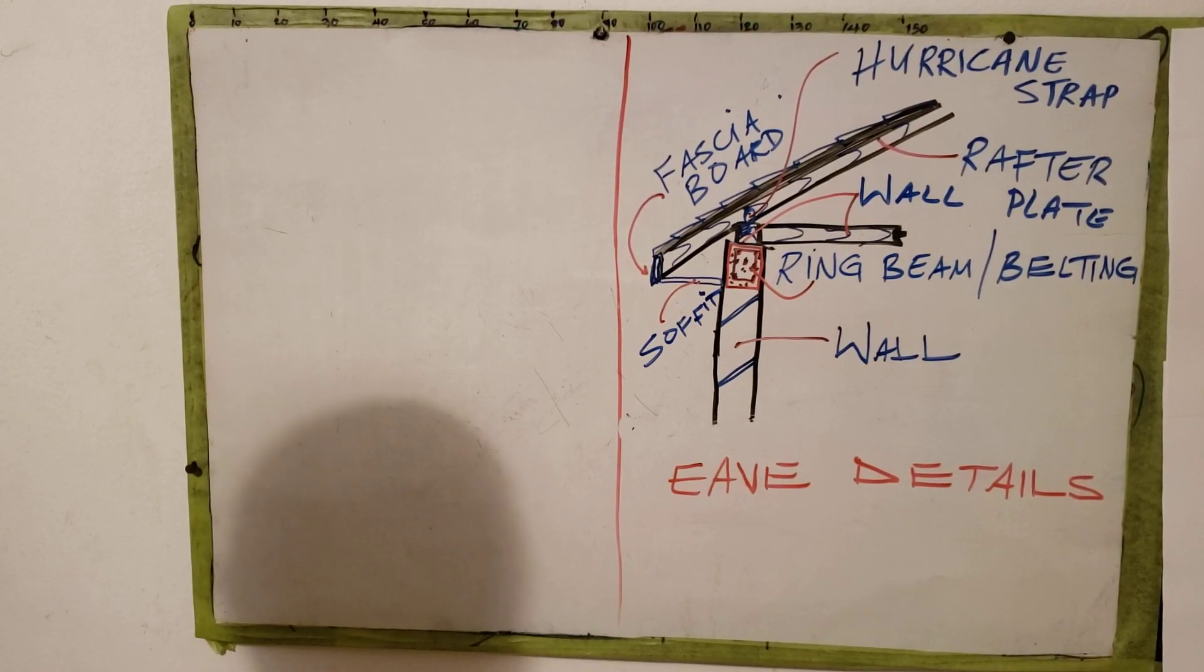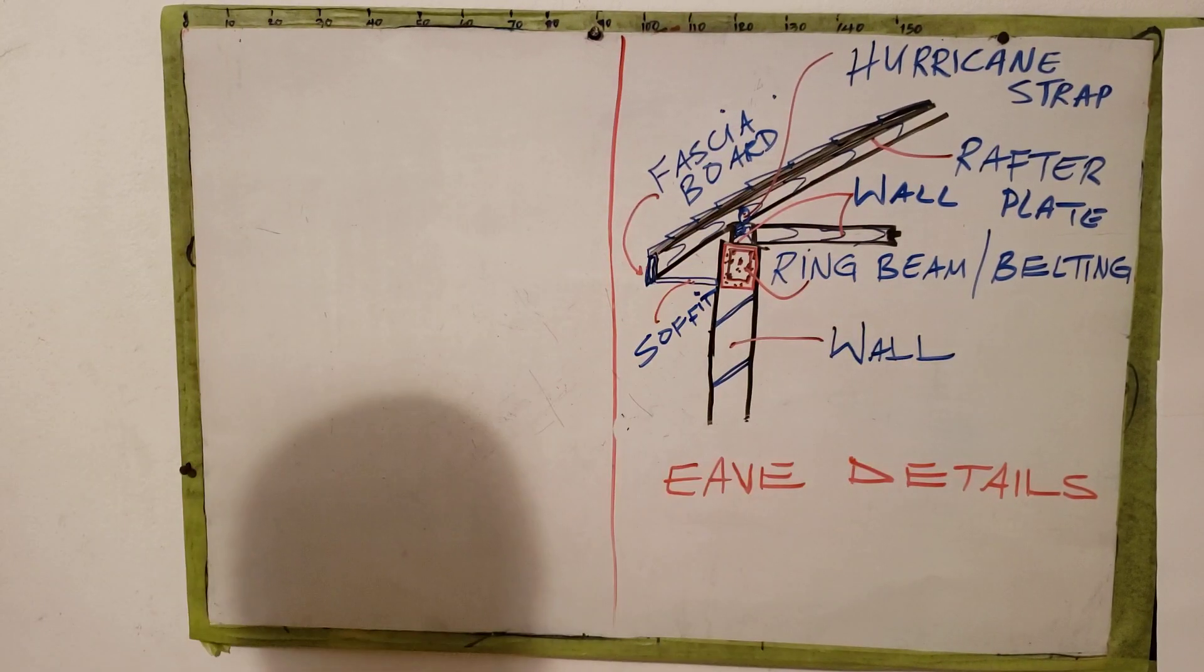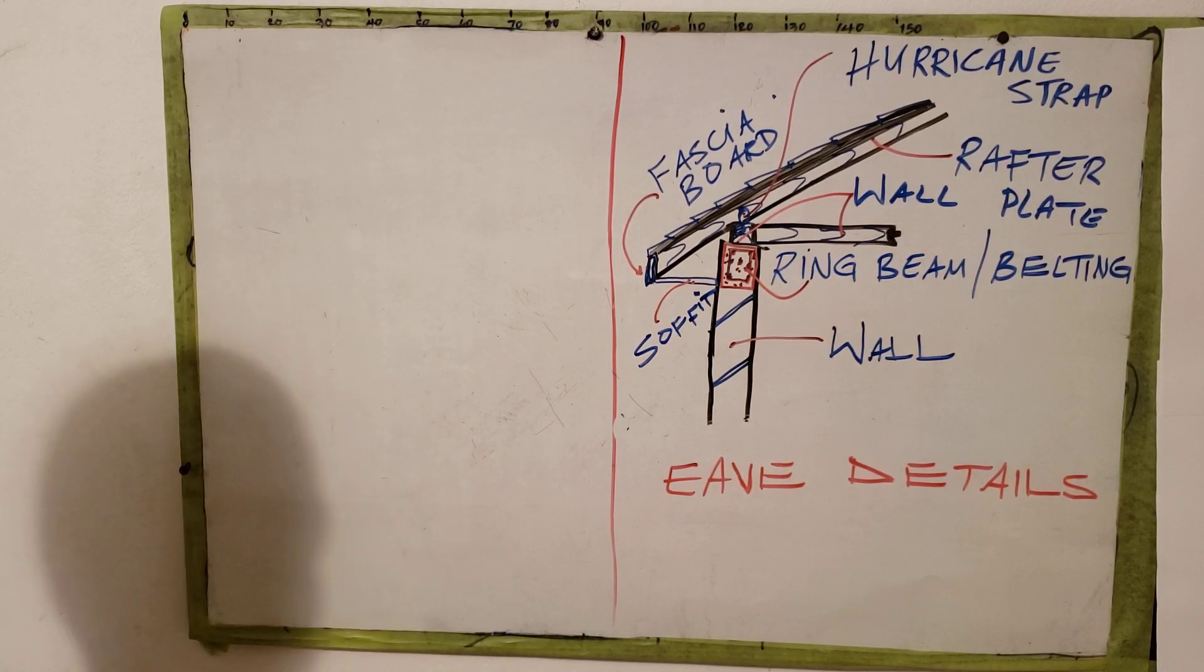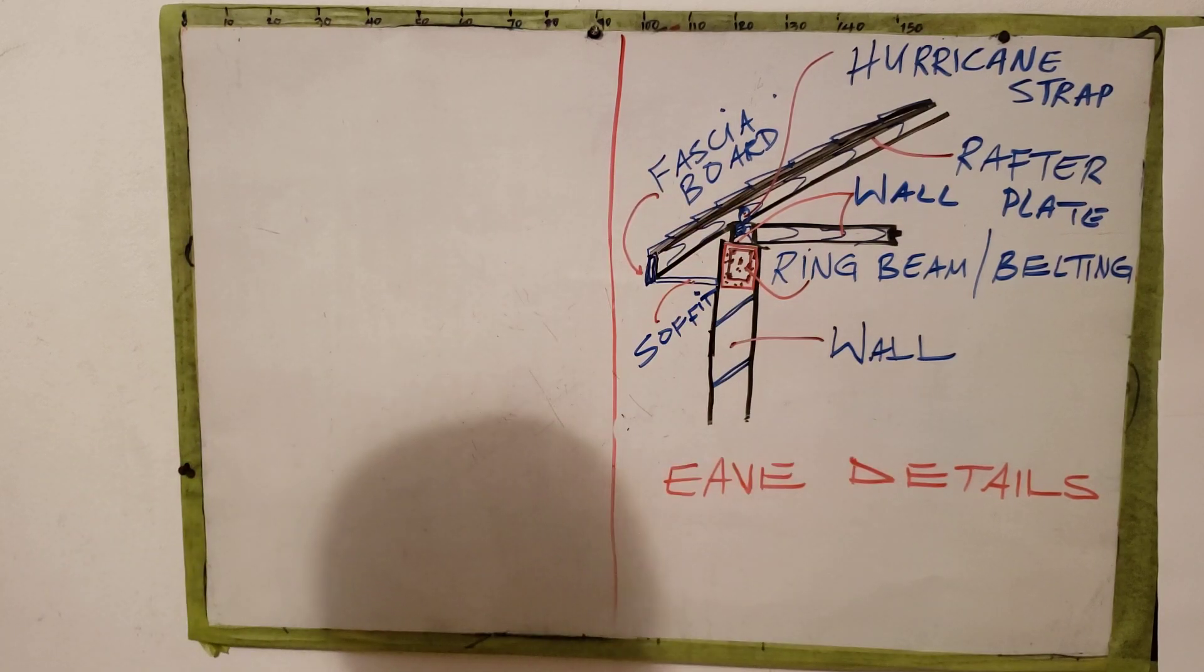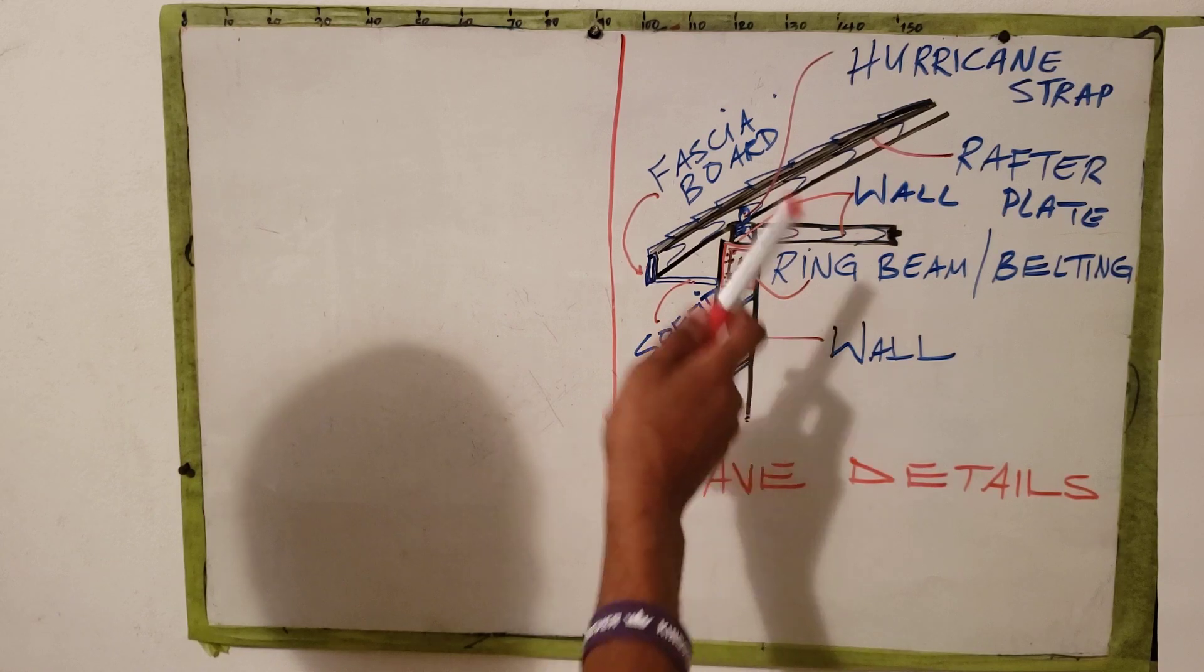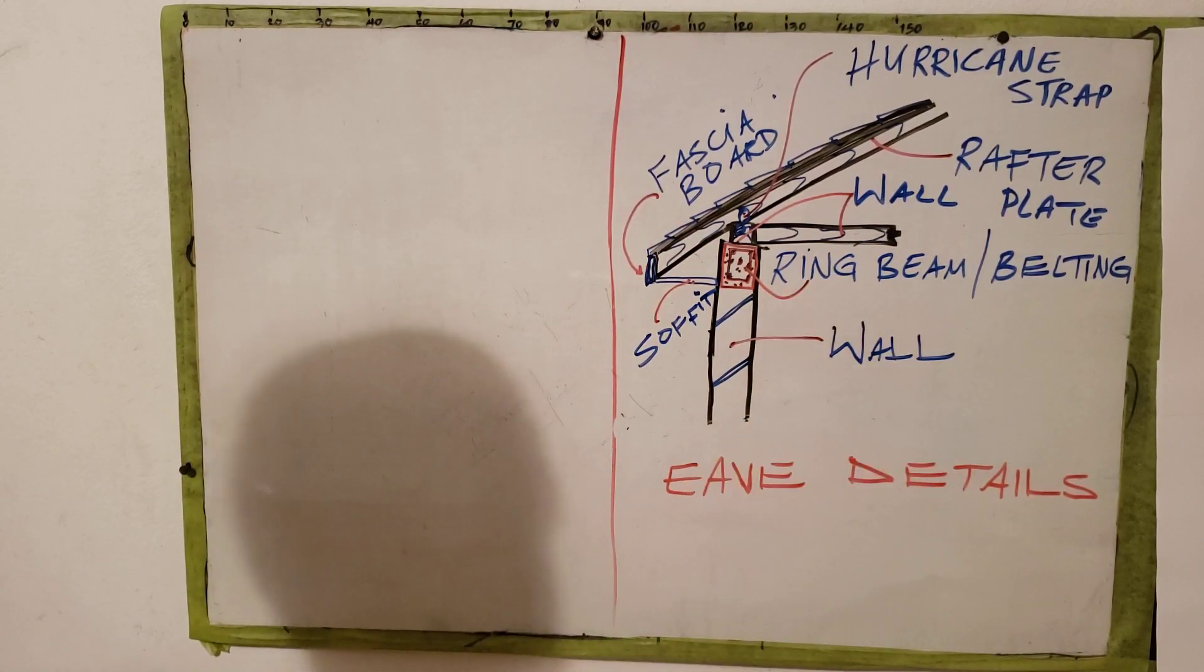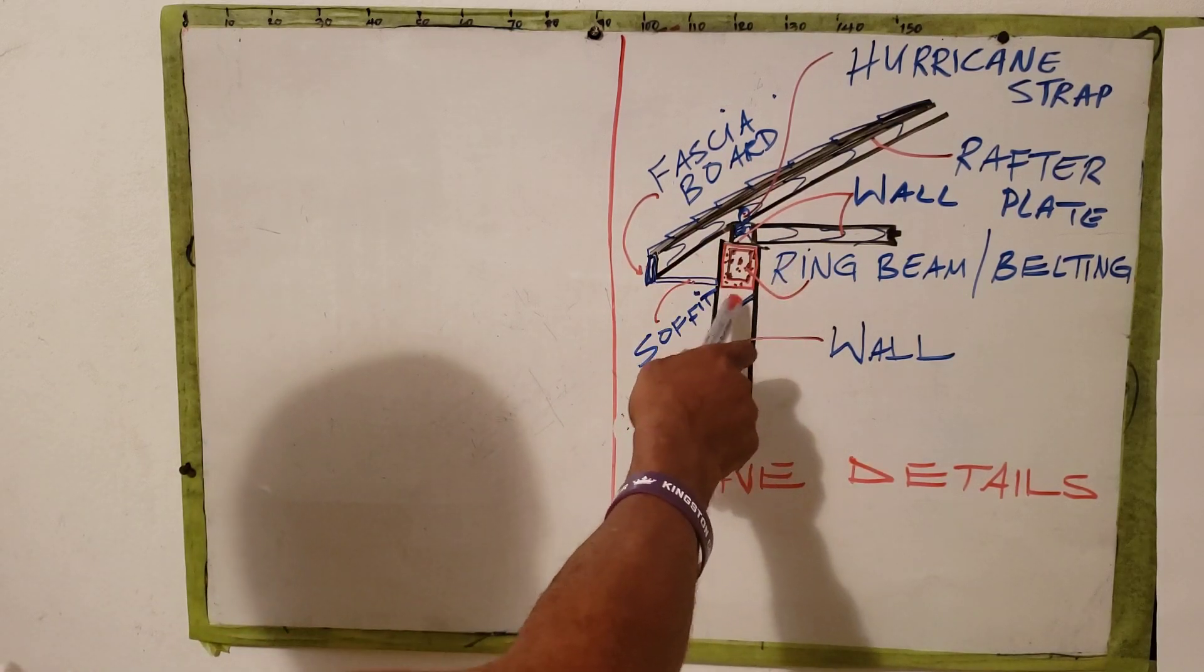Welcome back guys, in this video I'll be showing you how to draw eave detail. To be able to draw eave details, there are some important information that you need to know. First, you need to know the thickness of the wall. The wall is typically 150 millimeters.